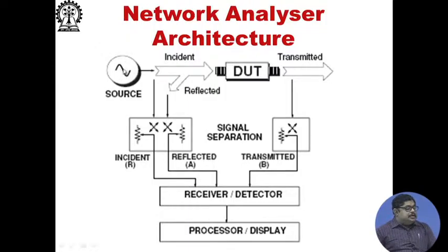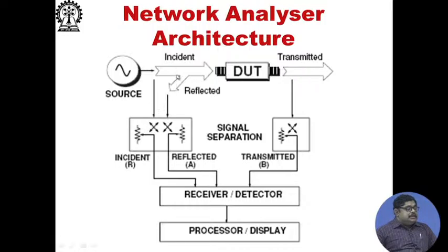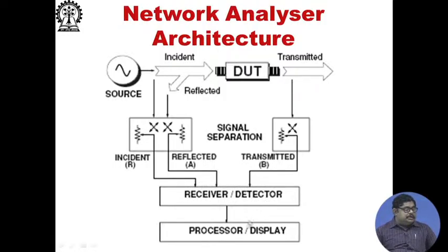The network analyzer also has signal separation devices — directional couplers to separate the signals — multiple receivers for signal detection, processing circuitry, and a display. In the architecture, the source produces the incident signal, which is applied to the device under test (DUT). It can separate incident and reflected waves, and also sample the transmitted wave. These three or four signals go to separate detectors for processing and display.